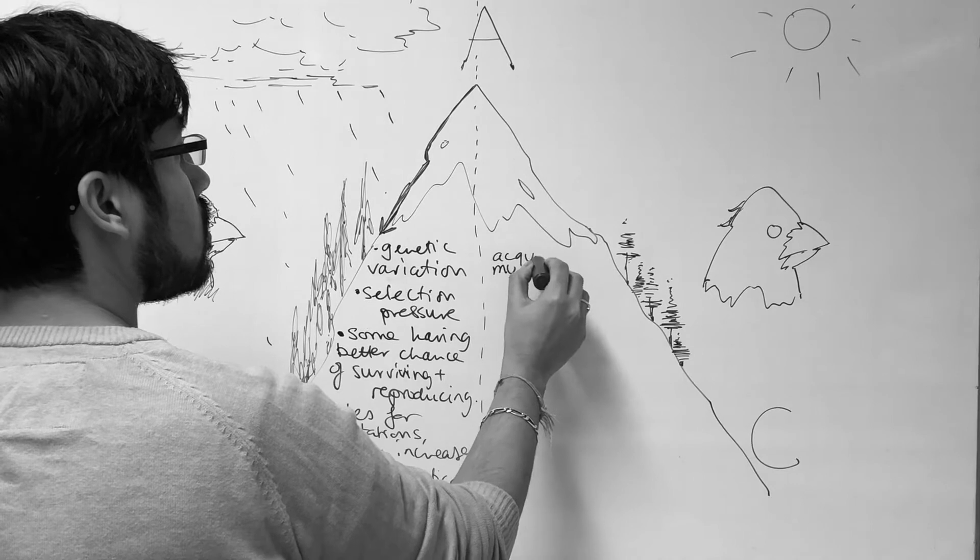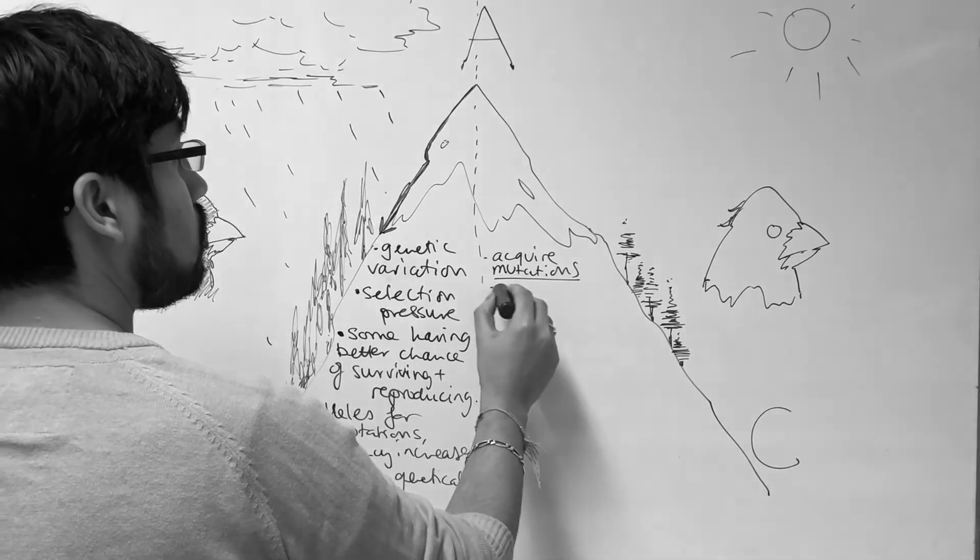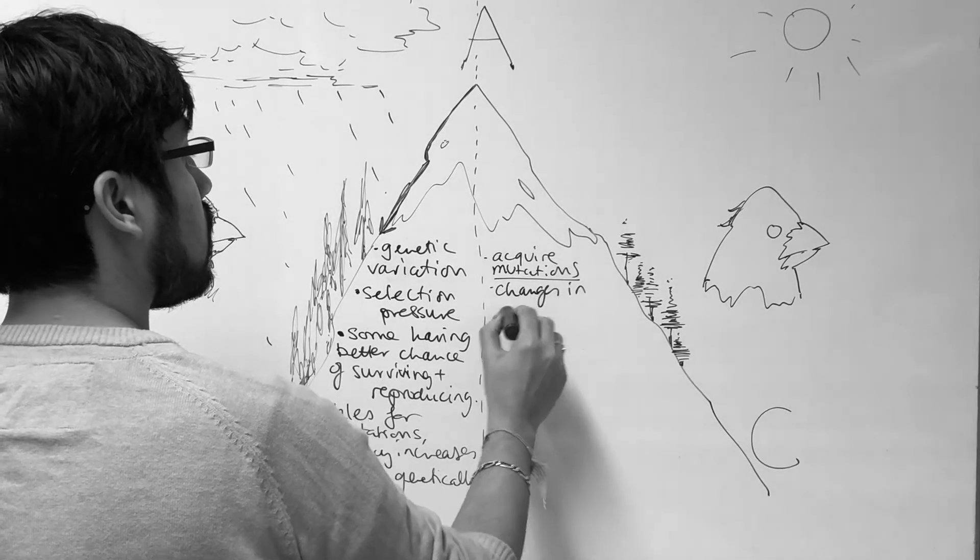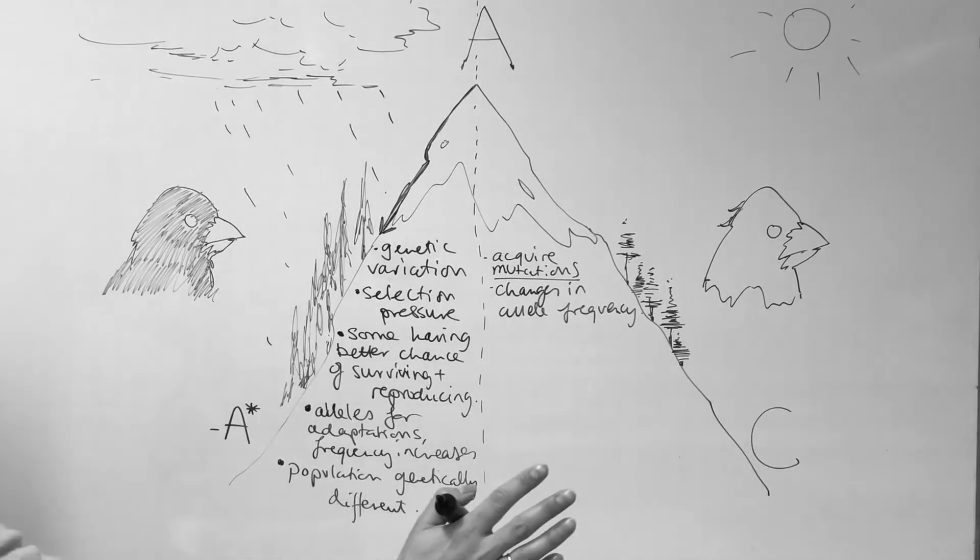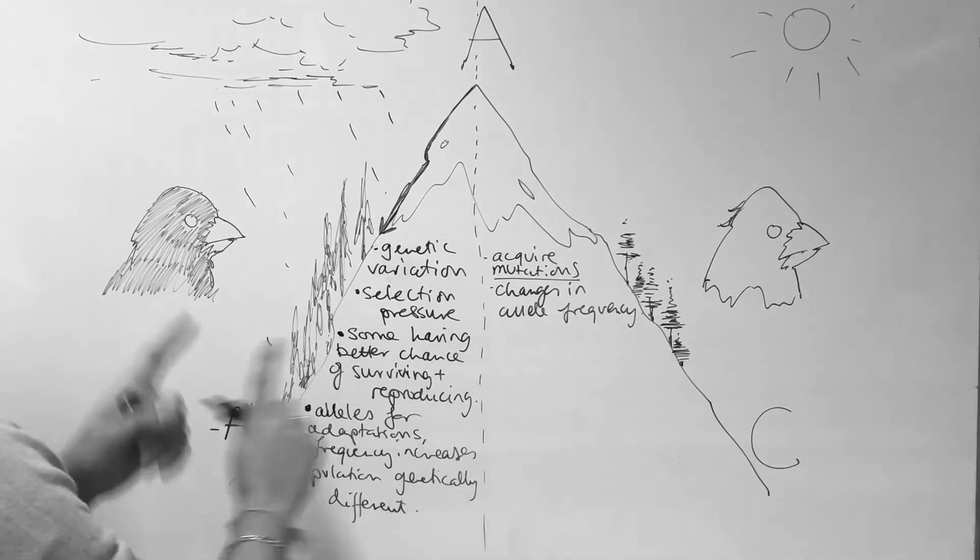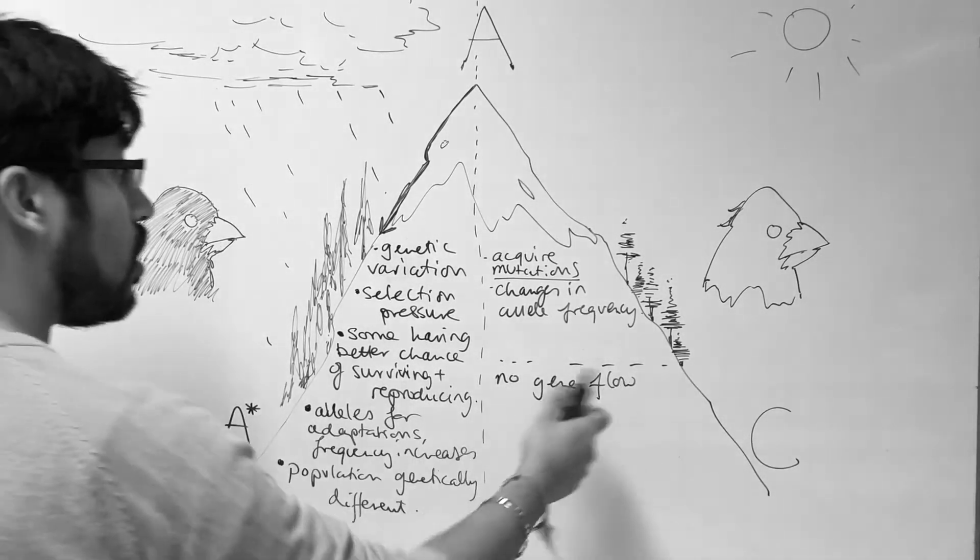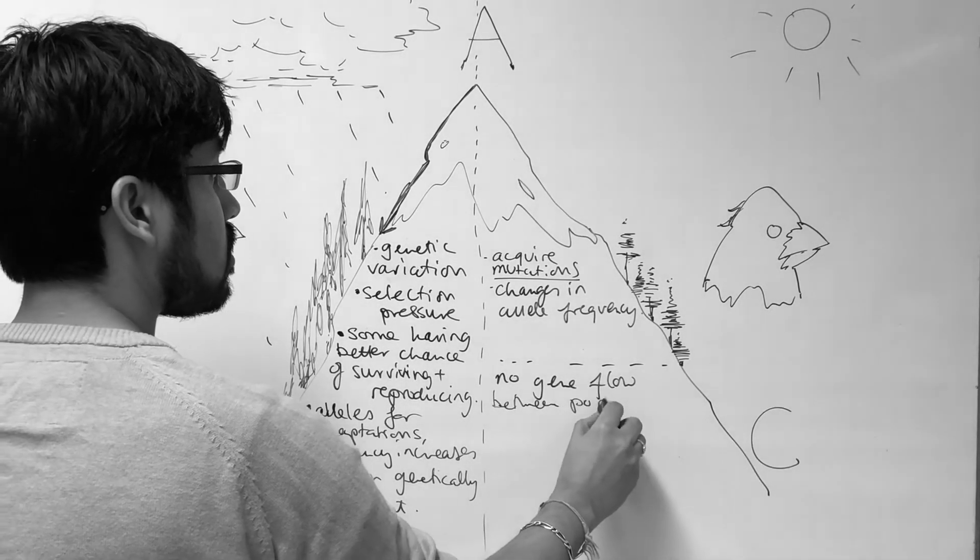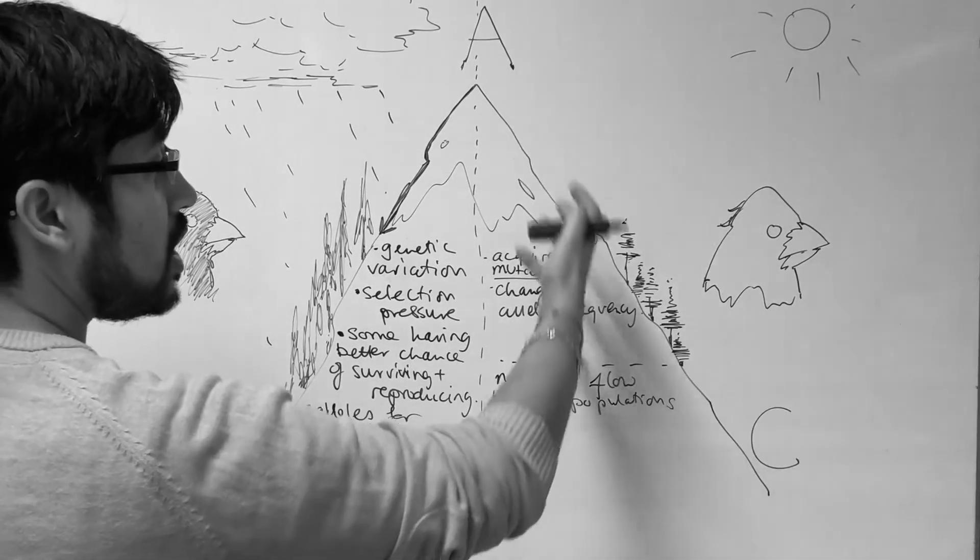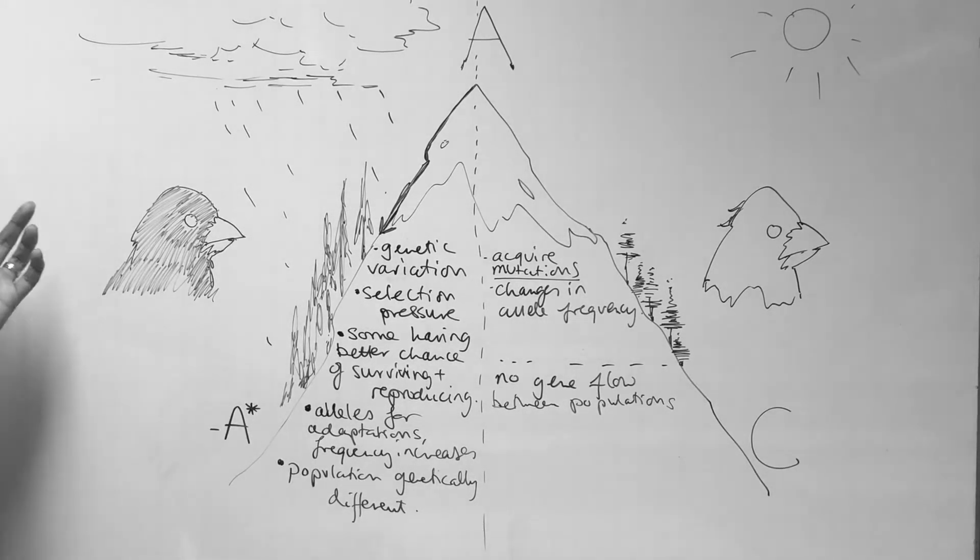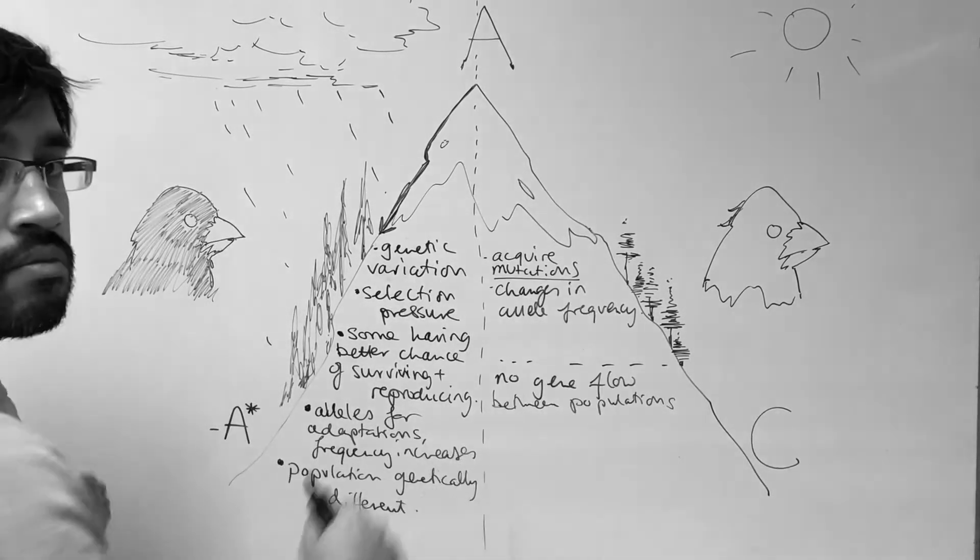Both populations are going to acquire mutations. These things are going to happen over time to both populations. But the key point being, because they're not reproducing with each other, there is no gene flow between populations. And this is what people often forget to say. There's no gene flow between the two populations. So they're changing. This population is acquiring genetic changes, this population is acquiring genetic changes. But those changes are not passing to the other population. So they're not changing together. They are becoming more different over time.